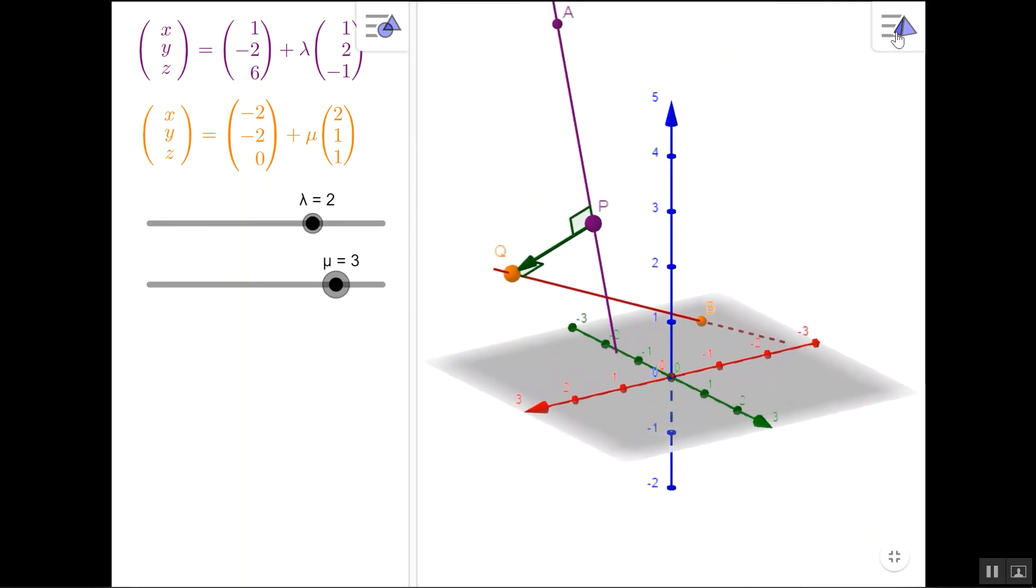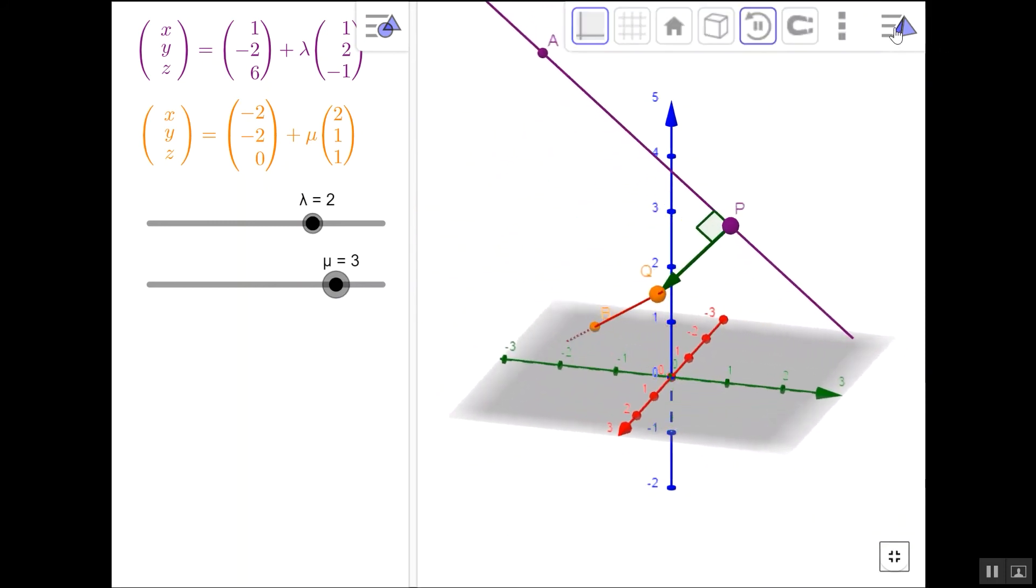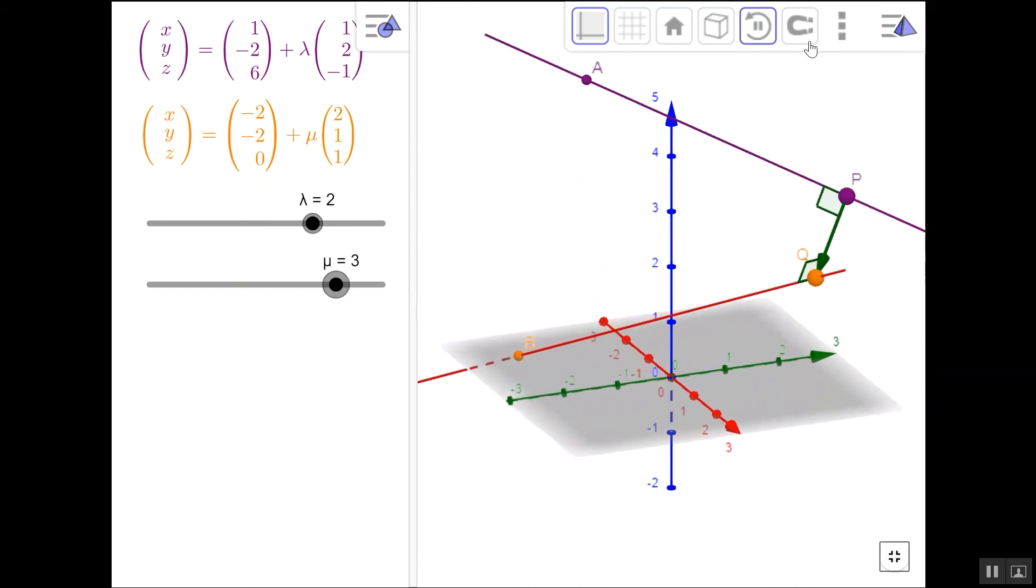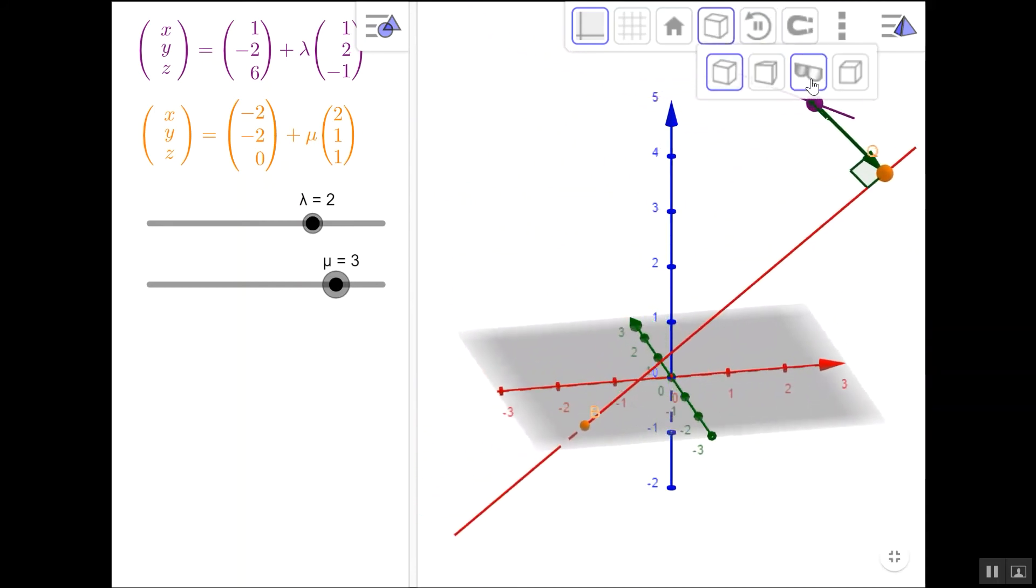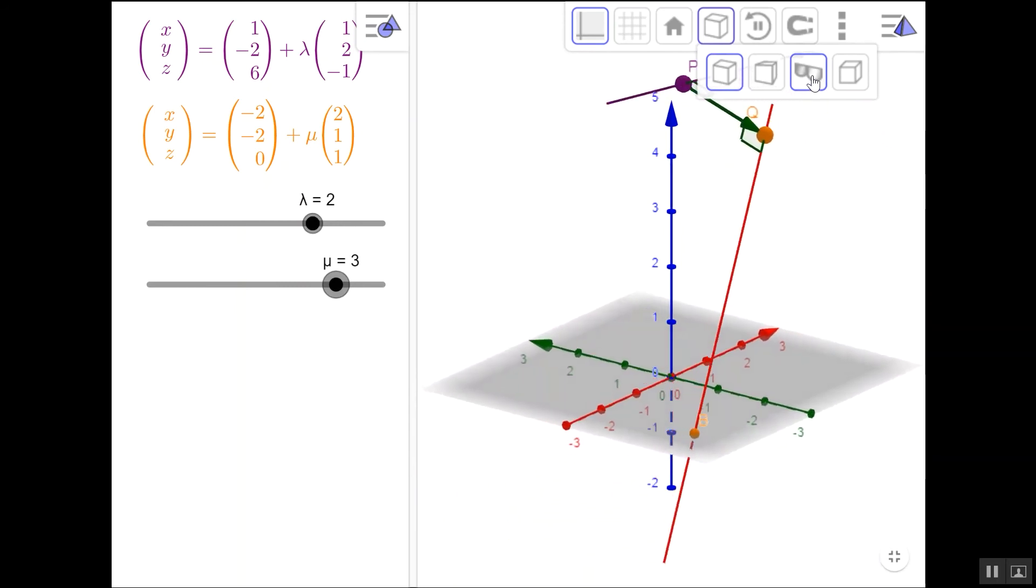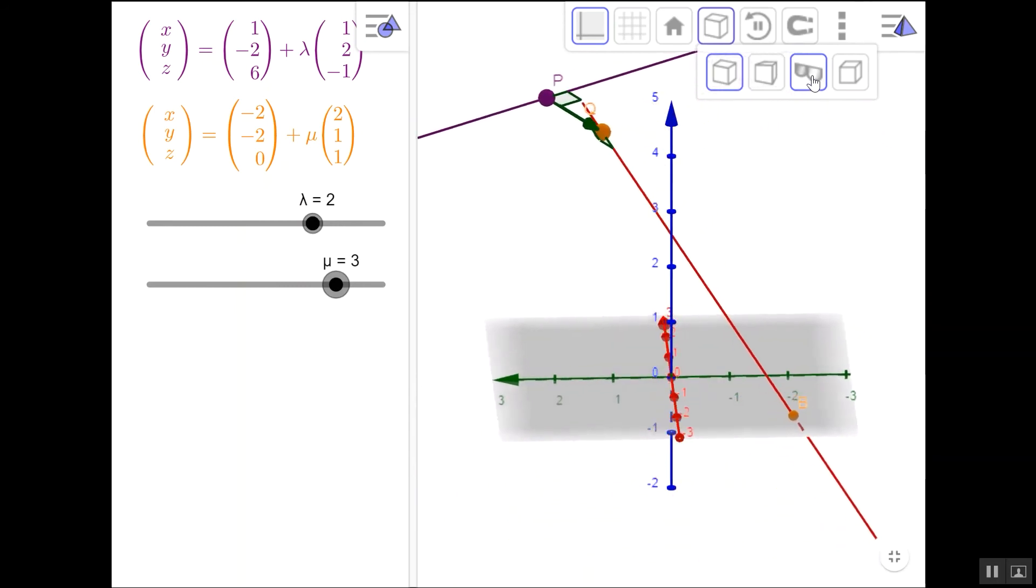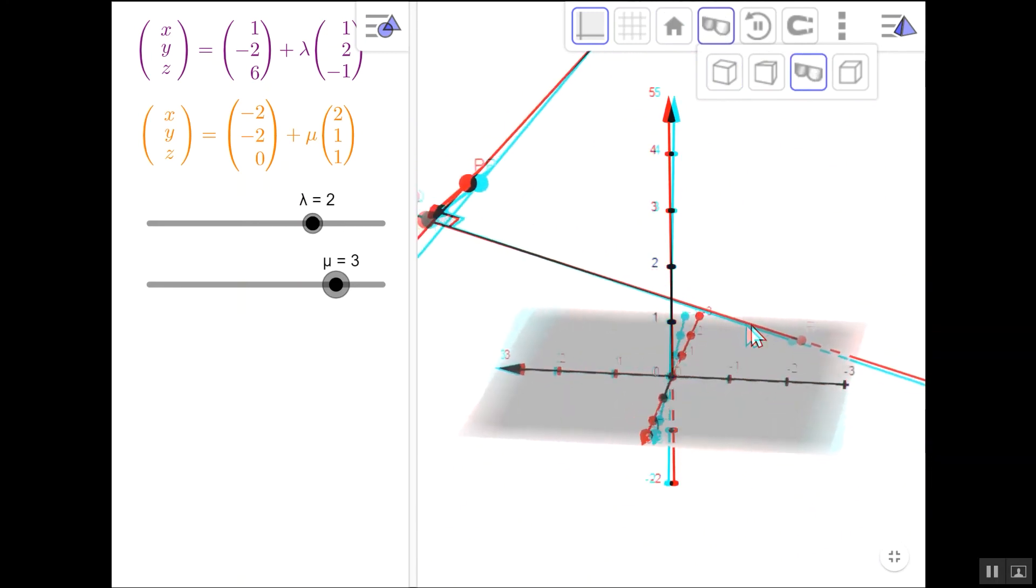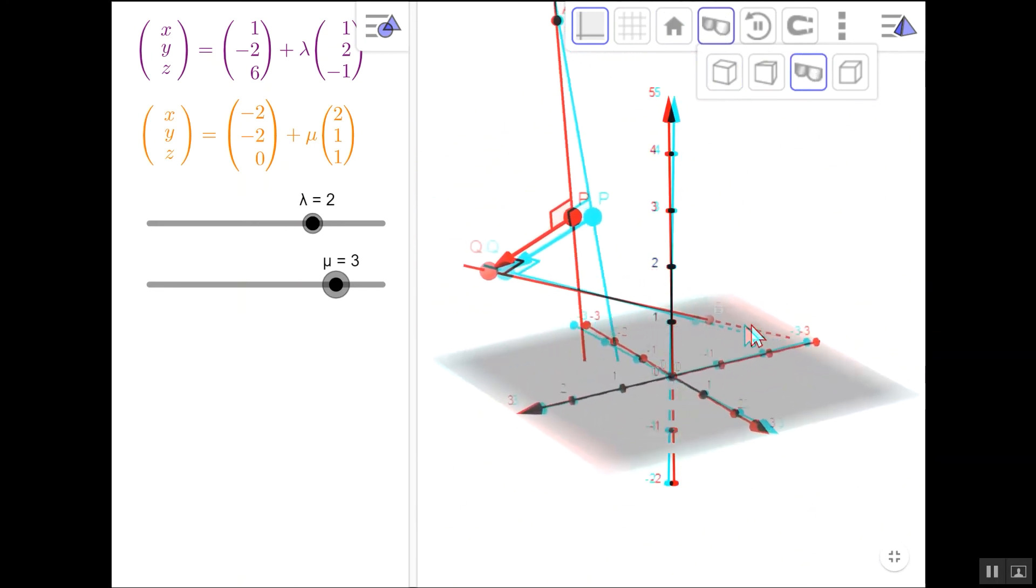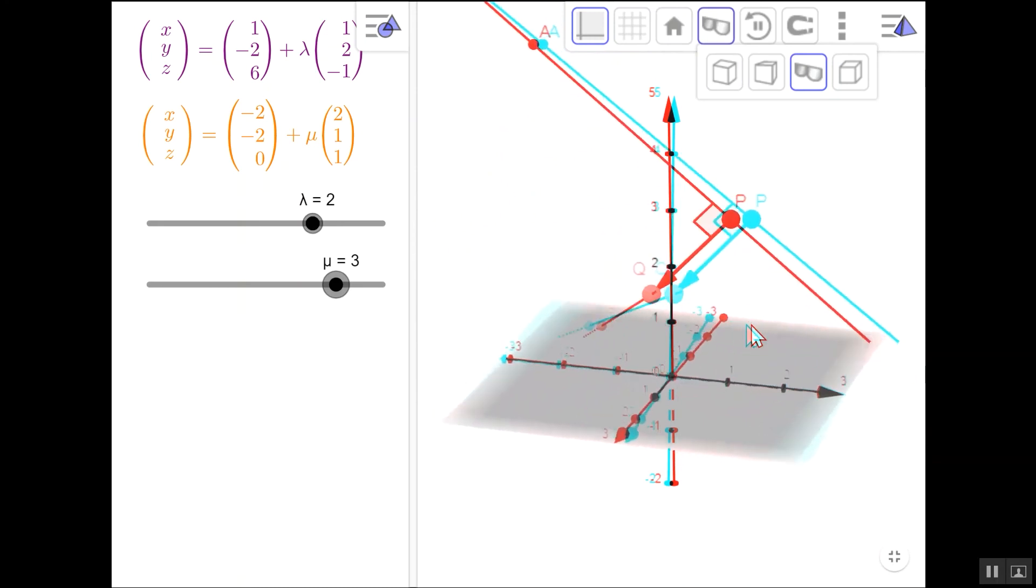One final nice thing to point out is if you do have any red blue 3D glasses, there's also a great way of representing this in a perspective that you can see in 3D with 3D glasses by choosing this middle option from the style bar here and this red blue. It's really worth playing with if you can get hold of some red blue 3D glasses.